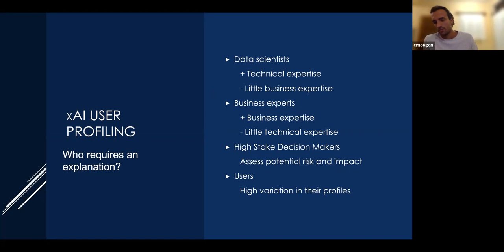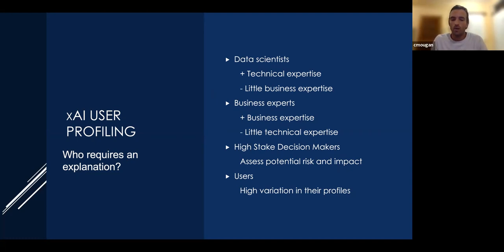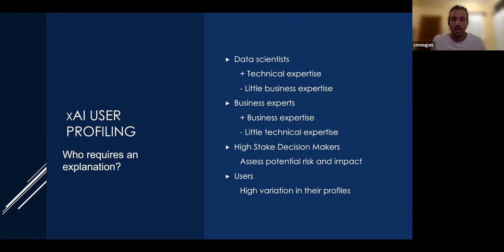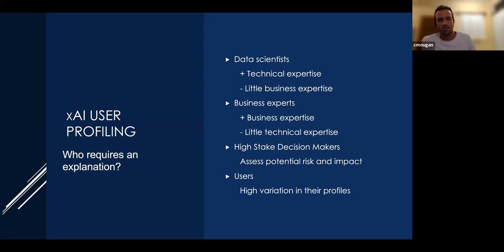Then we have high-stake decision managers. They are normally upper or senior management, and they are the ones who take the decision of moving the machine learning model to production. They are not looking for low-granularity explanations — they are looking more at assessing the potential risk and impact of the machine learning solution. Finally, we have end users. There is a high variation in their profiles because our data is public. Most of these users are business experts and economists who want to see and analyze the data, so the kind of explanation has to be highly varied.